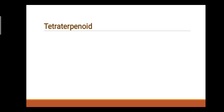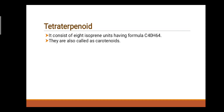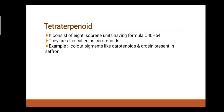Fourth class: Tetraterpenoids. They consist of eight isoprene units having formula C40H64. They are also called carotenoids. For example, color pigments like carotenoids and crocin present in saffron.